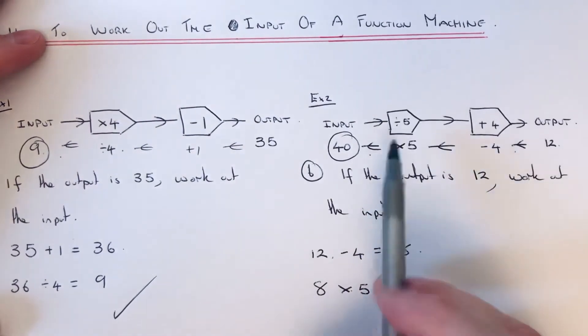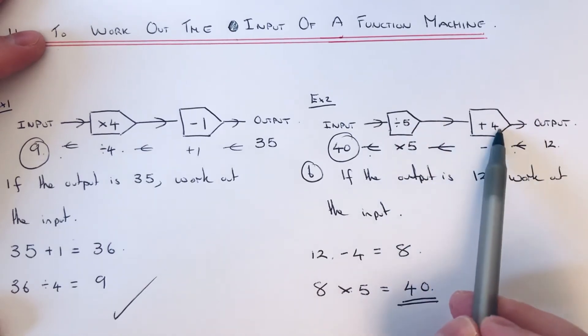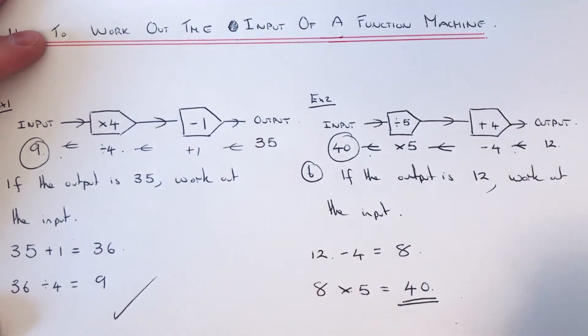So if we go 40 divided by 5 is 8, 8 add 4 is 12. So we know that 40 is the correct answer.